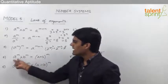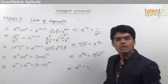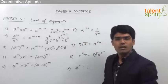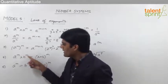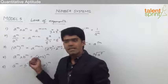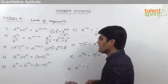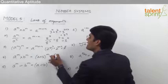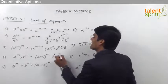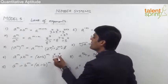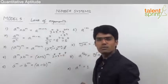The fourth rule is: a power m into b power m will be equal to a into b, whole power m. Whenever the powers are equal, the bases can be multiplied if they are in multiplication form. For example, 2 power 8 into 3 power 8 can be taken as 2 into 3, that is 6 power 8.